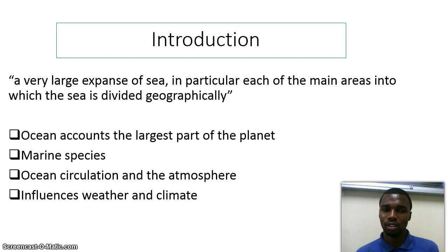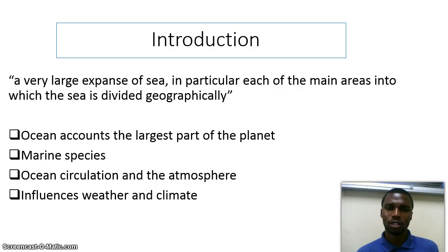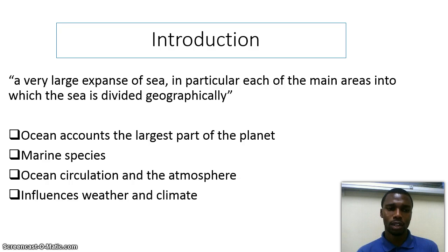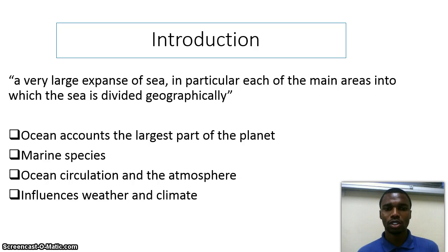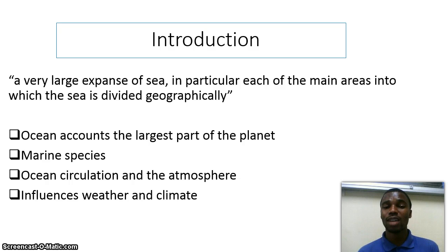What is an ocean? An ocean is a very large expanse of sea, in particular, each of the main areas into which the sea is divided geographically. Ocean accounts for the largest part of the planet — there is more water compared to land — and over the oceans there is a variety of varying spaces. The ocean circulation and the atmosphere work hand-in-hand, with oceans circulating much more slowly compared to the atmosphere. It also influences the type of weather and climate that we have, especially over Southern Africa.